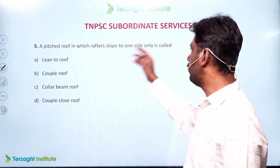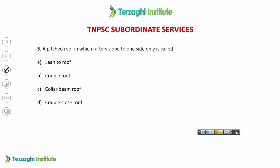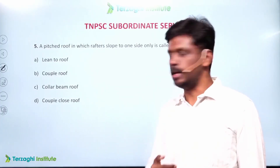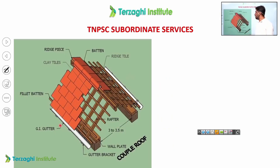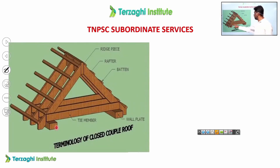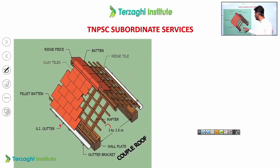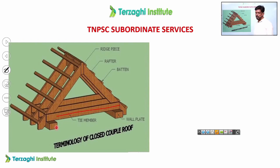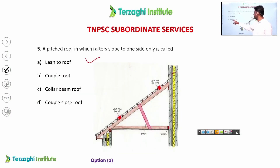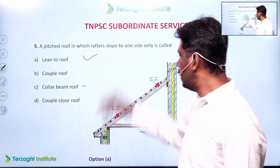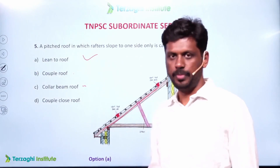A pitched roof in which the rafter slopes to one side only is called a lean-to roof. There are three main roof types: couple roof, which has two sides; closed couple roof, which adds a tie member; and collar tie roof, where the collar beam is placed higher up. You can see the differences in the diagram.